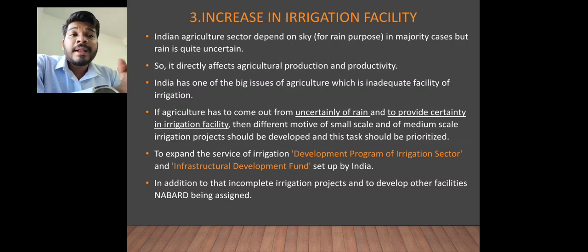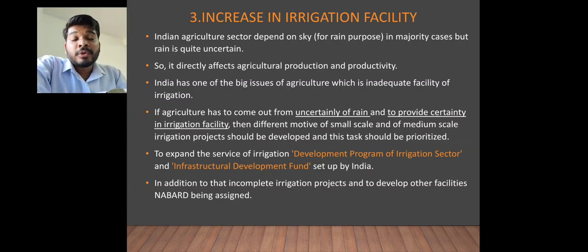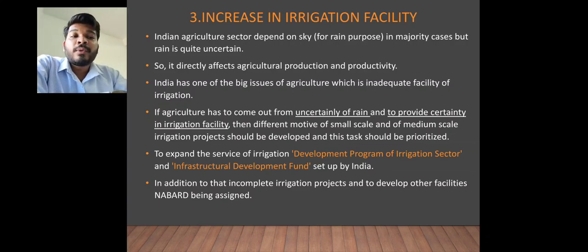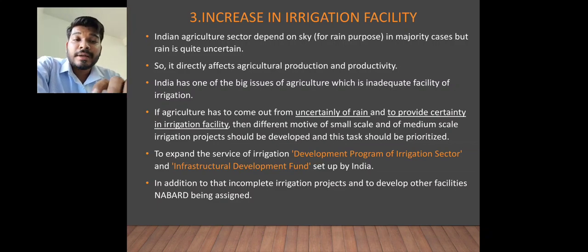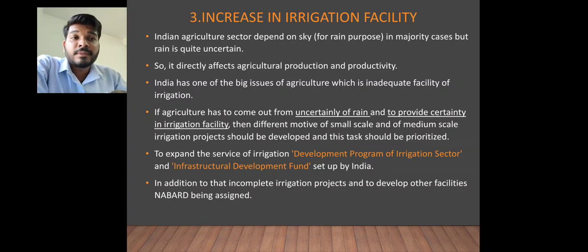Previously, poor farmers depended on uncertain rainfall — if water was not provided on time, crops failed. To solve this, irrigation facility was developed through the Development Program for Irrigation Sector and Infrastructure Development Fund, with NABARD as the main funding body. That covers three of six technological measures. Three more will be covered in the next lecture. For doubts, call or message — continue reading as this chapter is in the examination.